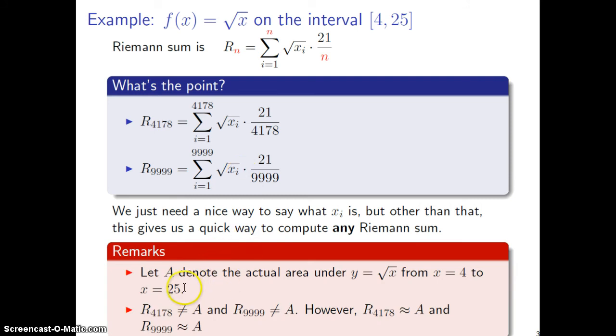Just as a couple remarks, just remember that A is being used to note the actual area under the curve, under the curve y equals root x from 4 to 25. And R_4178 is not equal to A, neither is R_9999, neither of these things are equal to A.